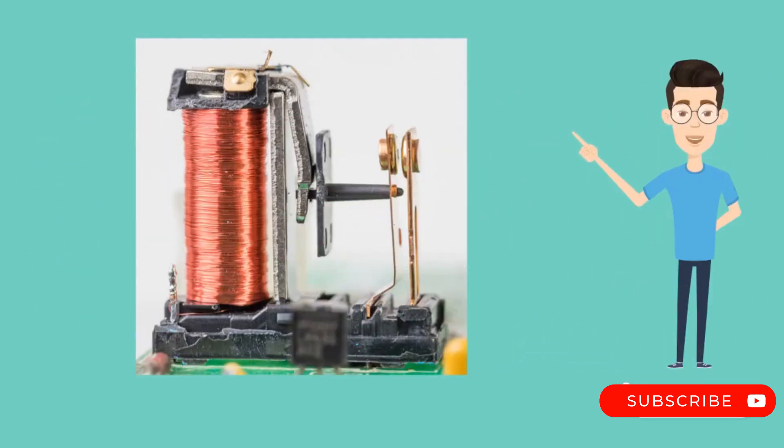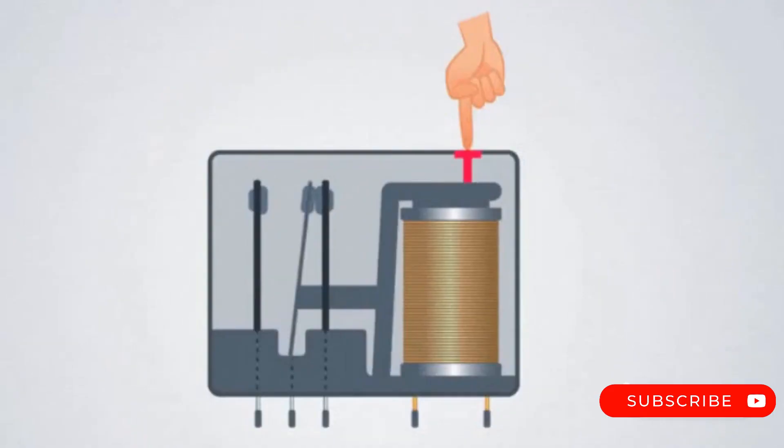Magnetic coil relays, on the other hand, use an electromagnetic coil to control the switch. When a current is passed through the coil, it creates a magnetic field that attracts a metal plate, closing the circuit and allowing current to flow. And in this way the contacts of the relay switches between normally open and normally closed.